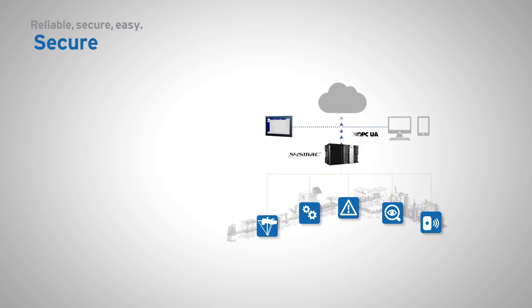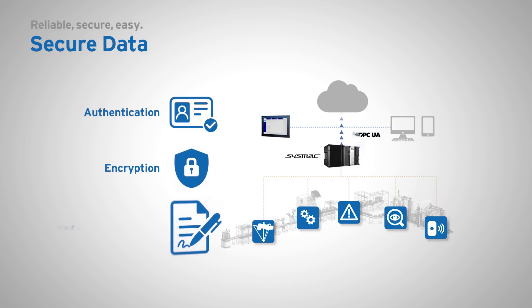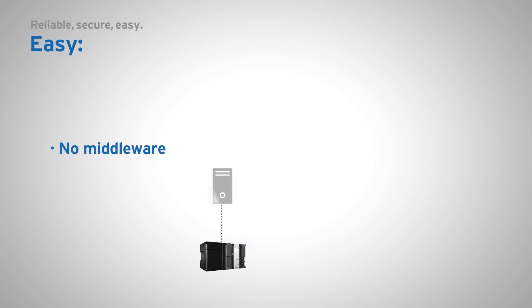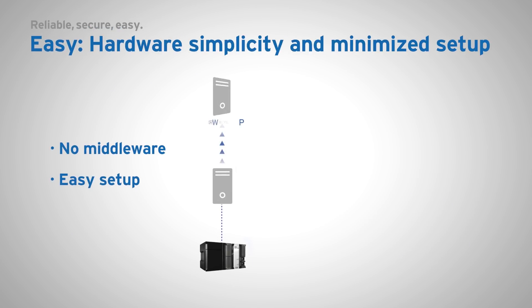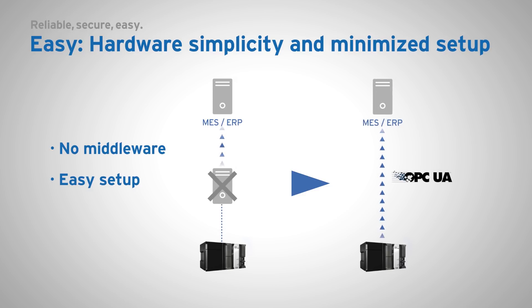It ensures secure exchange of information by providing access control, authentication and encryption. OPC UA eliminates the need for hardware middleware by directly connecting the controller variables to the host system. It simplifies the complete setup.